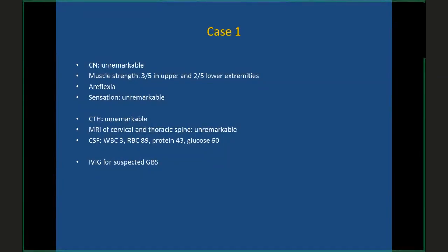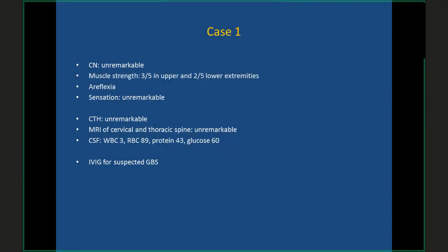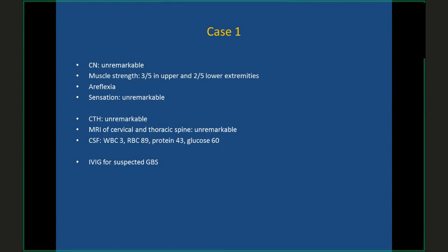The patient's past medical history included hypertension and hyperlipidemia. Given the progressive ascending weakness, we admitted the patient to the ICU. On examination, cranial nerves were intact; muscle strength was 3/5 in the upper extremities and 2/5 in the lower extremities. No reflexes could be elicited. Sensation was unremarkable despite subjective numbness and tingling. CT head was normal; MRI of cervical and thoracic spine was unremarkable. Lumbar puncture showed borderline protein at 43 with normal glucose. We started the patient on IVIG for a working diagnosis of Guillain-Barré syndrome.